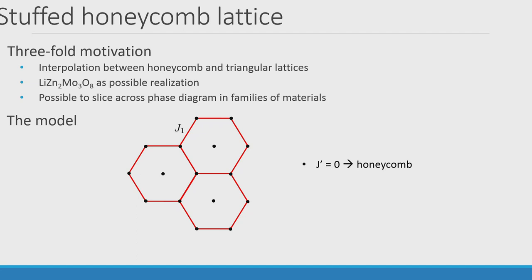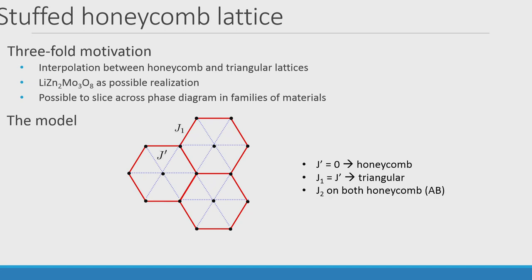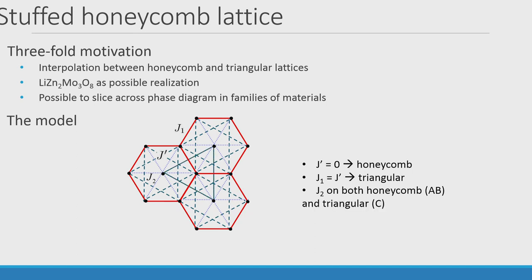The model: I have a honeycomb lattice with coupling J1, then an extra spin in the center of each honeycomb — on the dual lattice — coupled to the honeycomb sites with J-prime. If all J-prime bonds are equal to J1, I recover the triangular lattice. I also add J2 second-neighbor couplings on both the honeycomb sites and the triangular sites, keeping them all equal for simplicity. This makes the phase space two-dimensional and much easier to present. There are three sublattices, making this a non-Bravais lattice, which complicates the classical analysis somewhat. This is also related to the windmill lattice studied by Peers with Peter Orth, Premi Chandra, and Joerg Schmalian, which shows interesting classical order-by-disorder behavior.